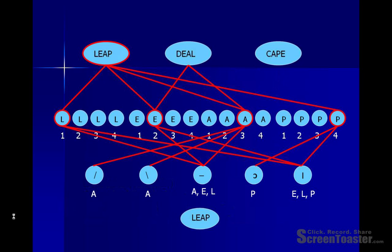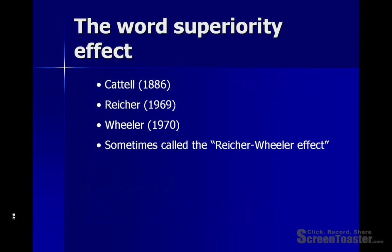What the person recognises is the word 'leap,' because the word unit for 'leap' has a greater degree of activation than either of the other word units shown on the screen. The interactive activation model also explains another finding in the literature: the word superiority effect, which was first identified by Cattell in 1886, but was very convincingly demonstrated by Reicher in 1969 and Wheeler in 1970 — sometimes called the Reicher-Wheeler effect. The effect is the fact that when you show a person a letter in isolation and ask them to identify it, they are slower to respond than if you show them the letter in the context of a word.